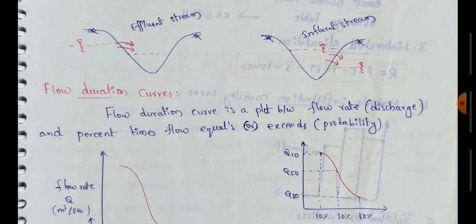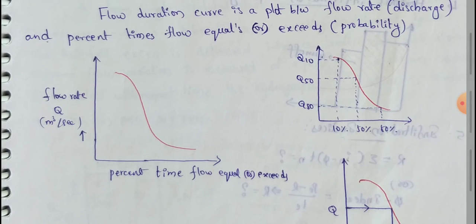Next: flow duration curve. A flow duration curve is a plot between flow rate — which means discharge — and percent time flow equals or exceeds, which represents probability. The x-axis shows percent time flow equal or exceed, and the y-axis shows flow rate, i.e., discharge Q in meter cube per second.